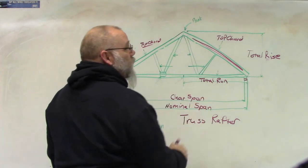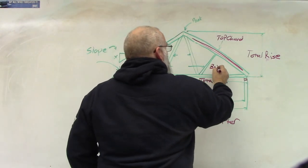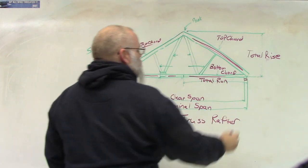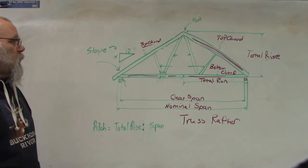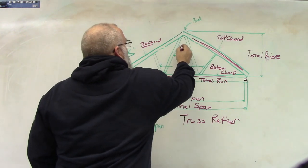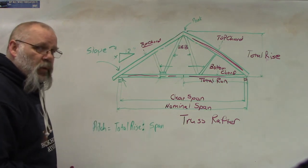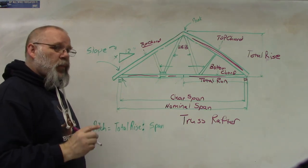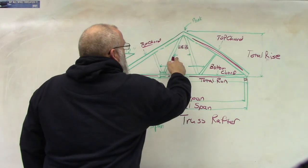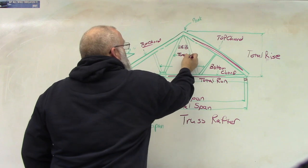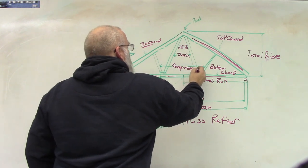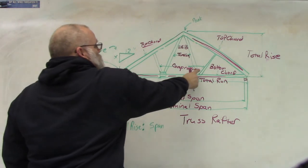The one that runs across the bottom is the bottom cord. Now, what are the boards in between called? These four boards right here are called webs. There are two types of webs: a tension web and a compression web. Compression means to pull something apart; compression means to push it together. In this case, these top two are in tension and these outside ones are in compression.